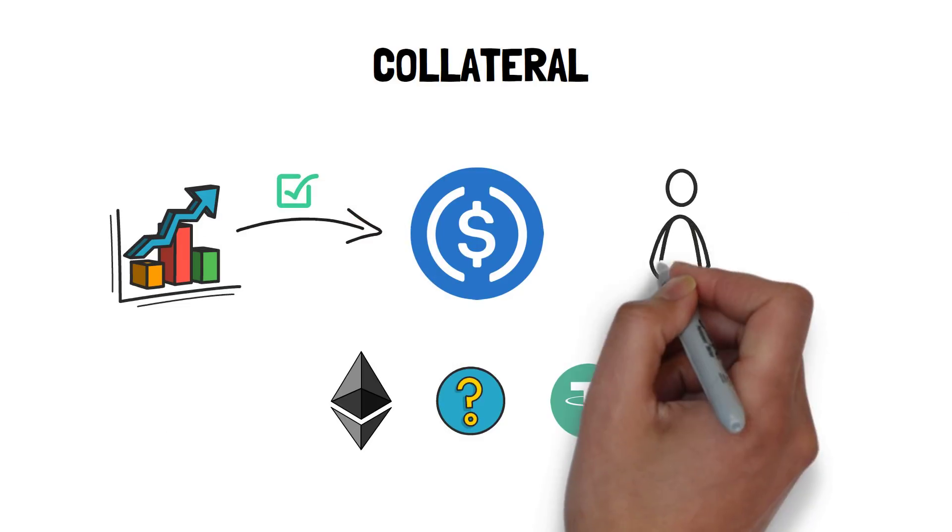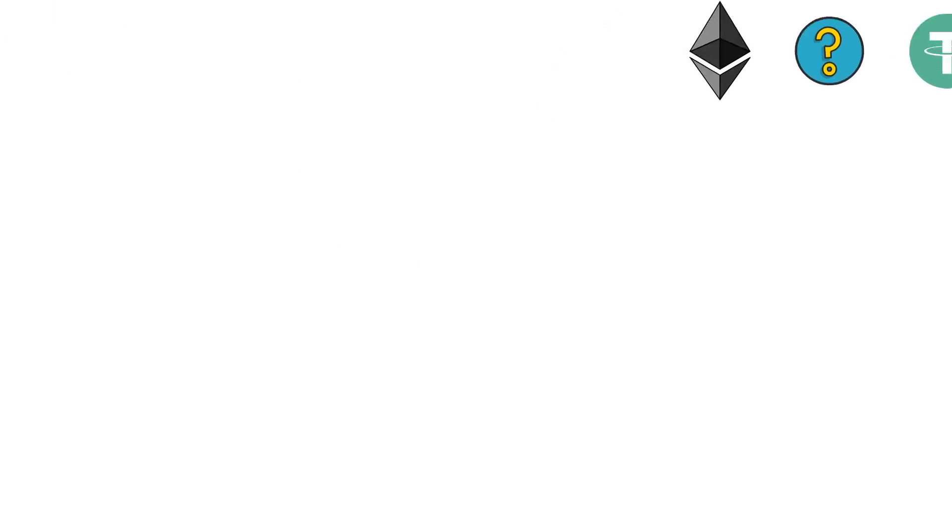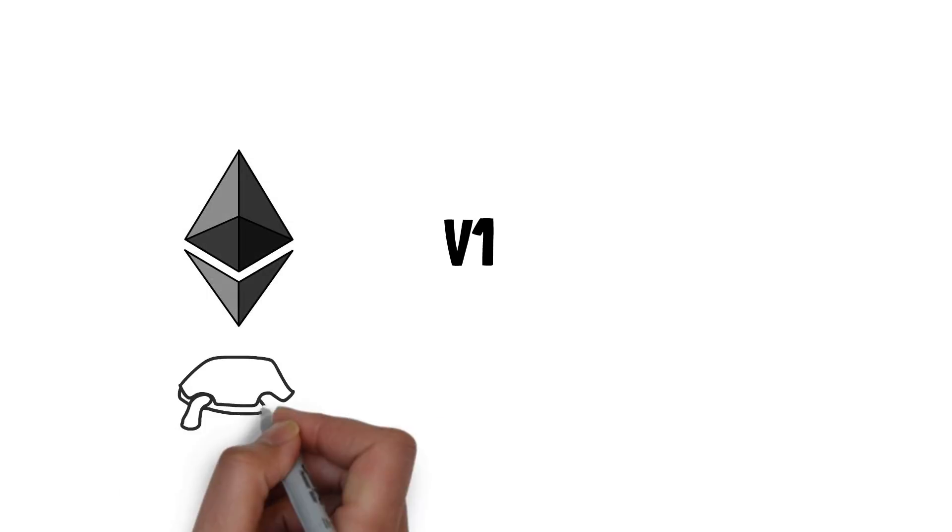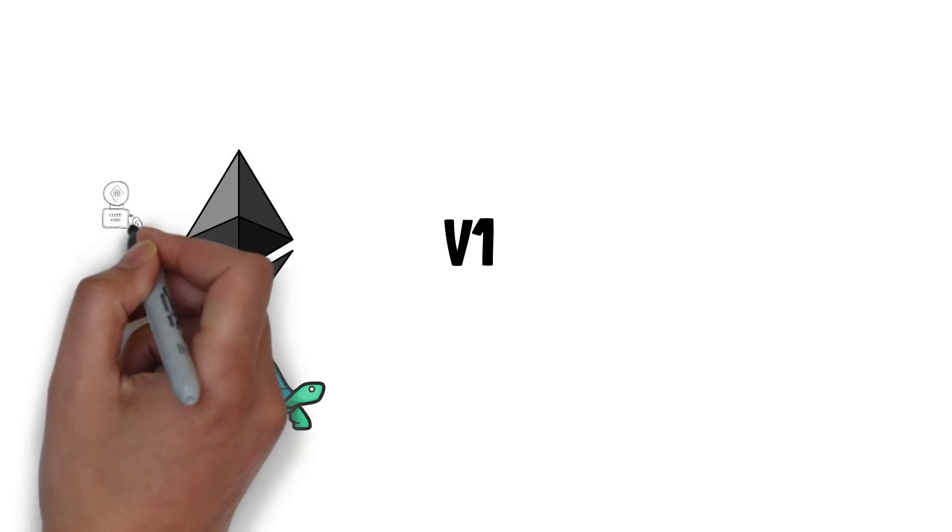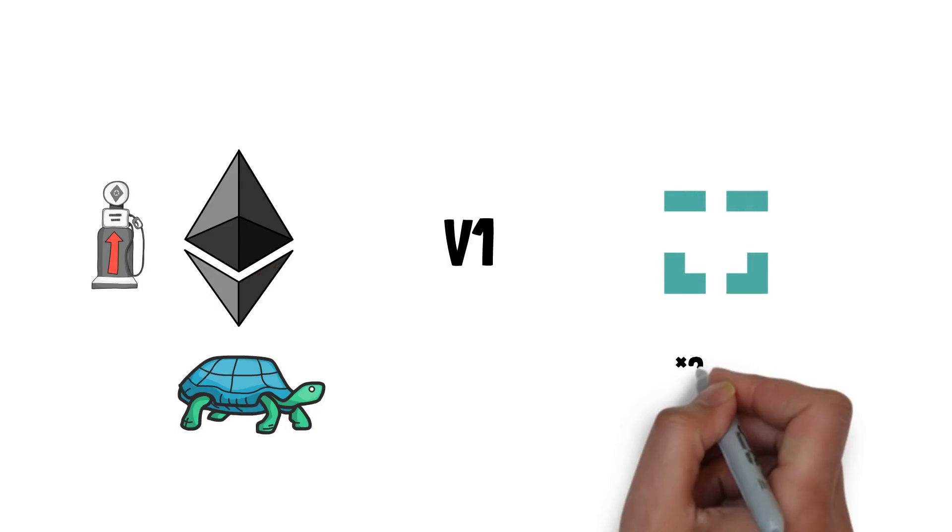This means that if a user speculates on the price of Ether and, let's say, doubles their money, they'll end up with more USDC in their account after closing their position. The V1 of the protocol was initially deployed on Ethereum layer 1, but after experiencing problems with slow execution and high transaction fees, the protocol was released on XDAI at the end of 2021.